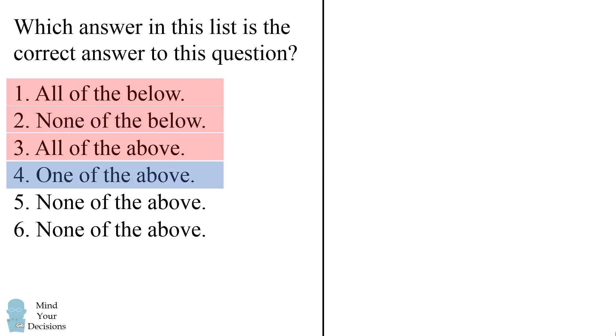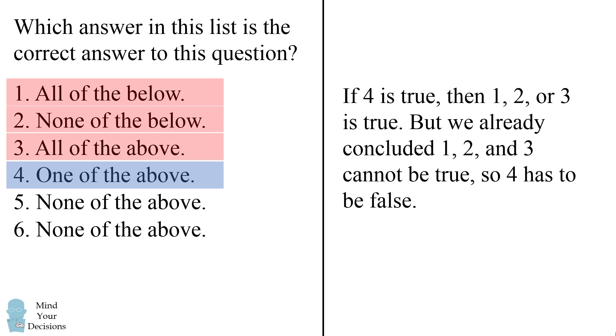Now consider statement 4. If 4 is true, then 1, 2, or 3 has to be true. But we already concluded that 1, 2, and 3 cannot be true. This means statement 4 has to be false.